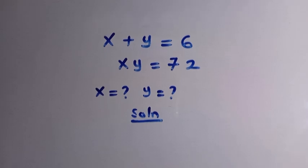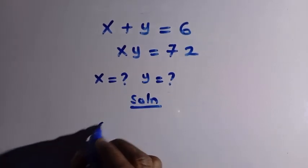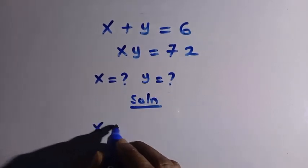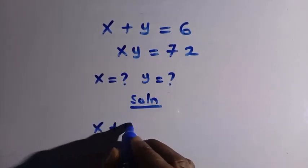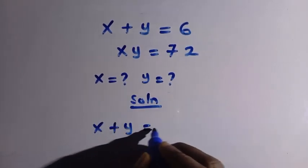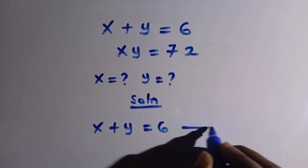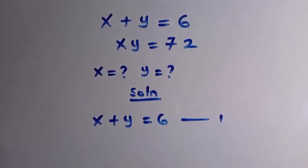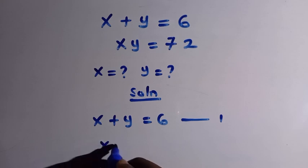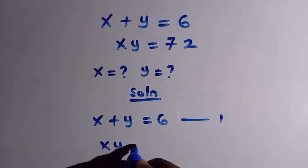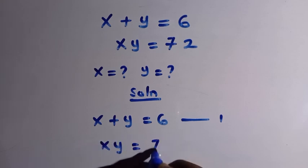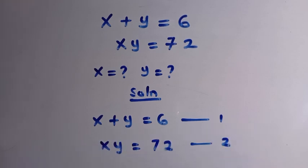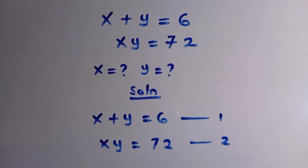From the given equations, we have x plus y equals 6 — we consider this as equation 1. And also, we have xy equals 72 — we consider this as equation 2.